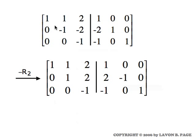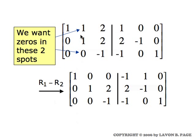Moving to the second column, we have a minus one where we want a plus one, so we multiply row two by minus one. With the one now in that spot and a zero already below it, we just need to zero out the remaining entry above, which we do with row one minus row two. Now we're done with columns one and two.